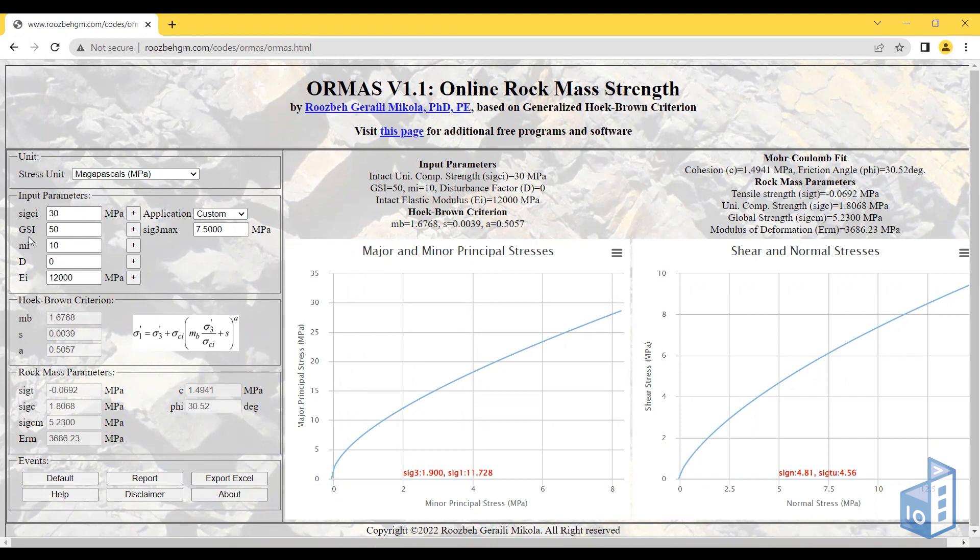Geological types like siltstone or claystone will have different m values. The disturbance factor considers mechanical disturbance or significant relaxation of the rock mass. If you're not sure what values to select, this should come from your field data, but you can click on this plus symbol for guidance.